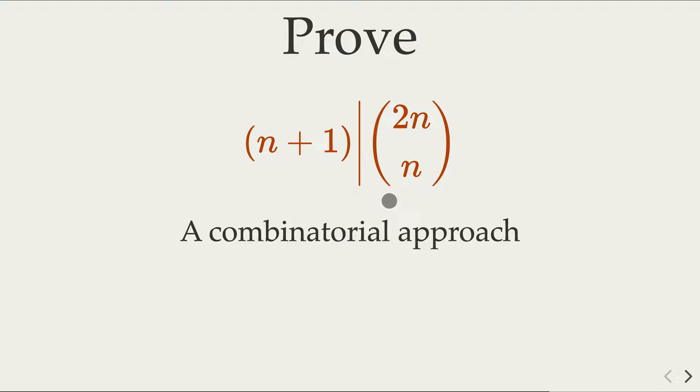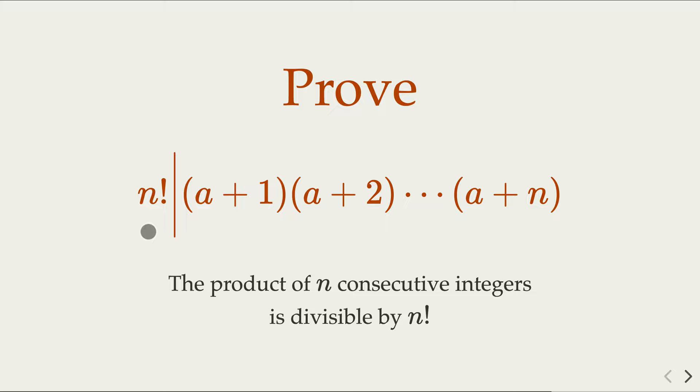We're going to use number theory for the proof. Now, we're going to base it on another fact that is also presented in an earlier video: the product of n consecutive integers is divisible by n factorial.